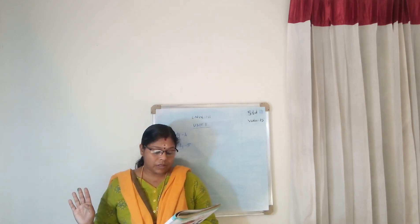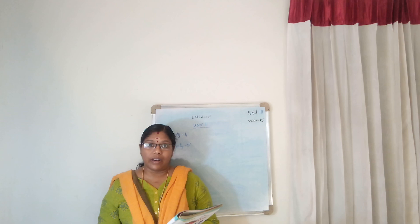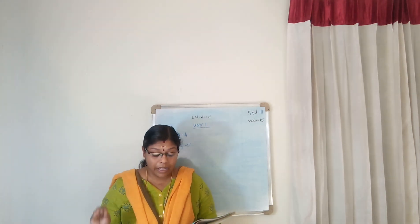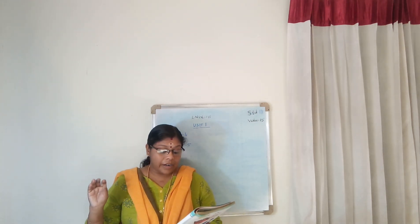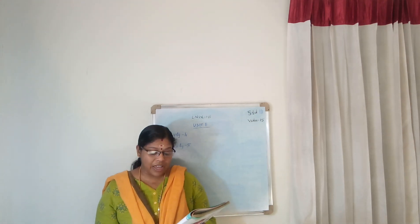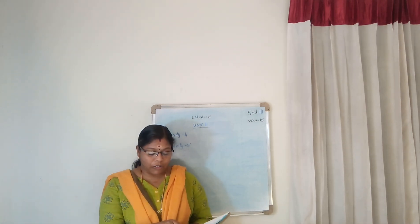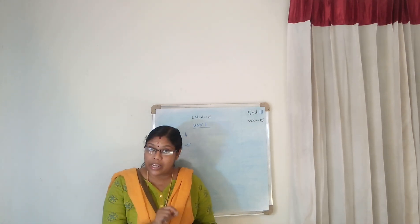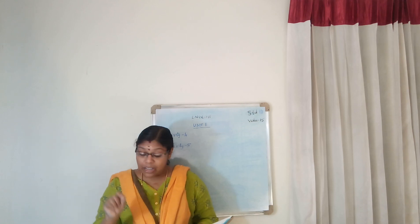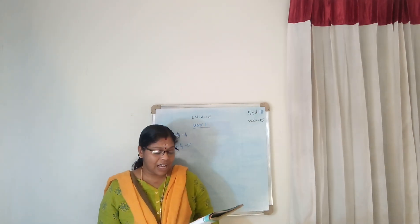Third one. Look at the picture. Two children are there. They are dancing. How will you write? Rafi is dancing with his friend. Both of them are dancing, so Rafi is dancing with his friend.